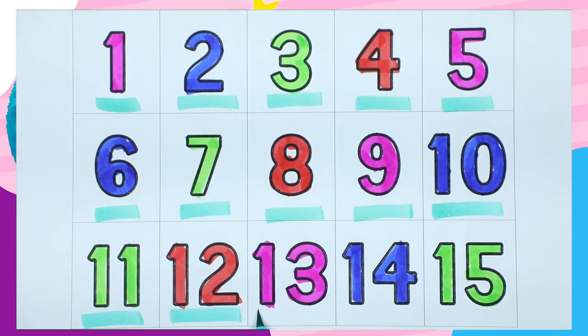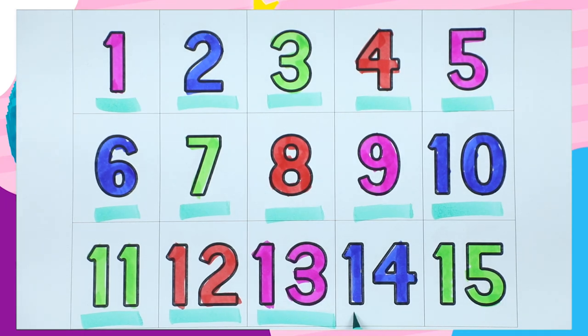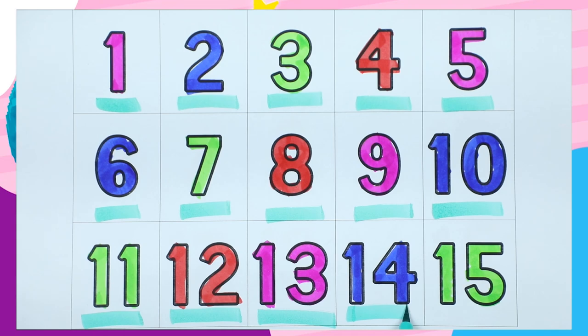One three, thirteen. Which color is this? Pink. One four, fourteen. It's blue color. One five, fifteen. It's green color.